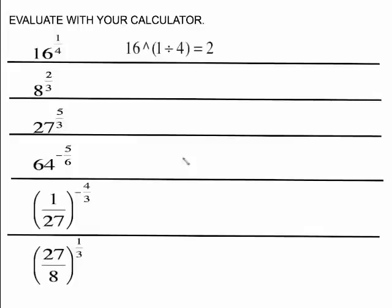Now you also have to be able to evaluate with your calculator. For 16 to the 1/4: take 16 as the base, use your caret symbol, and raise it to the 1/4 power — that fraction needs to be in parentheses: 1 divided by 4. You should get 2. If you have a graphing calculator but no caret, you may have a button called y-to-the-x or x-to-the-y. Instead of hitting the caret, you'd hit 16, then that button, then the rest.